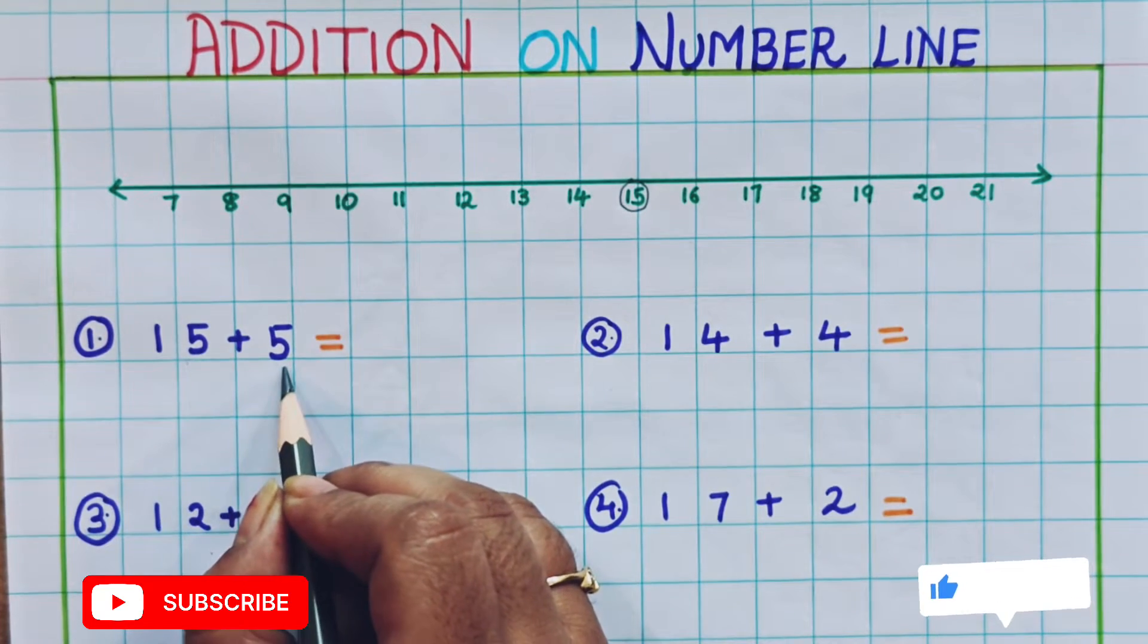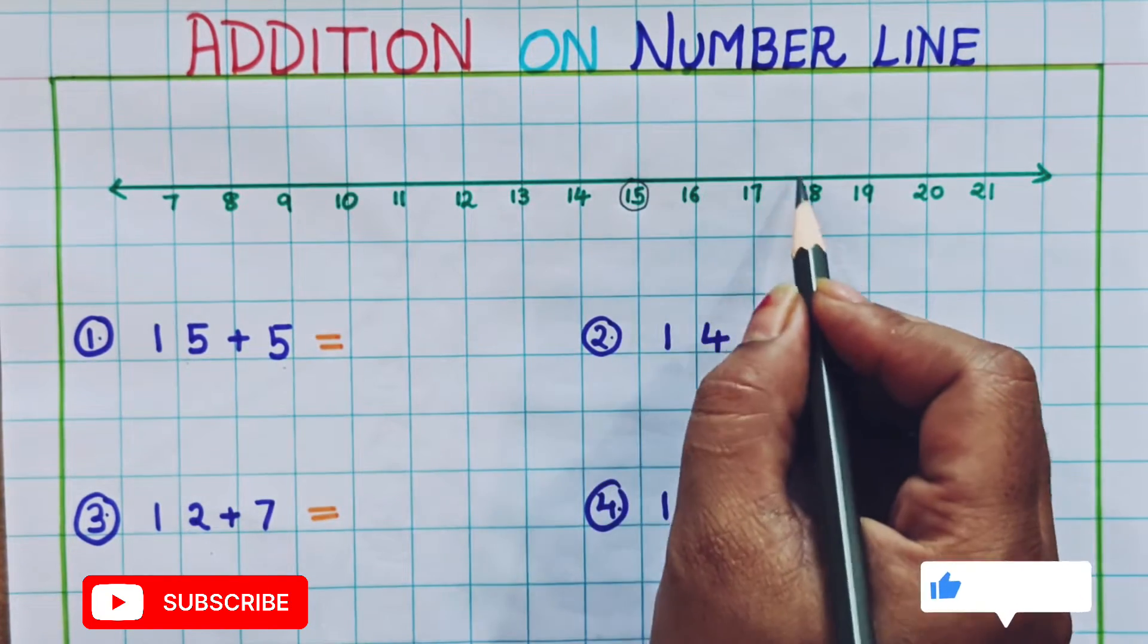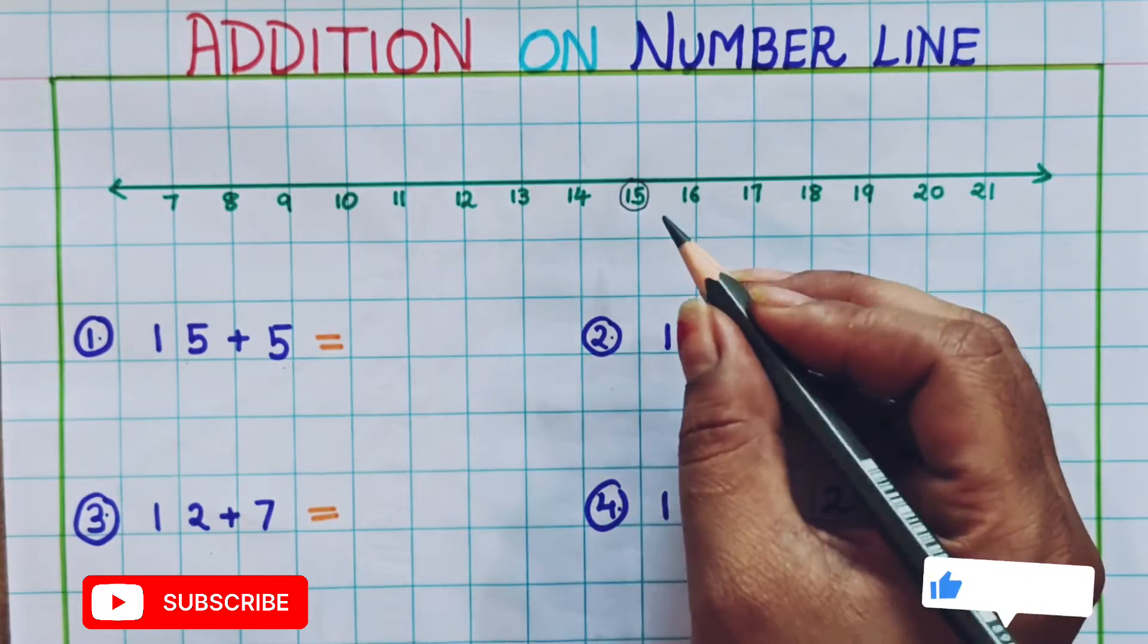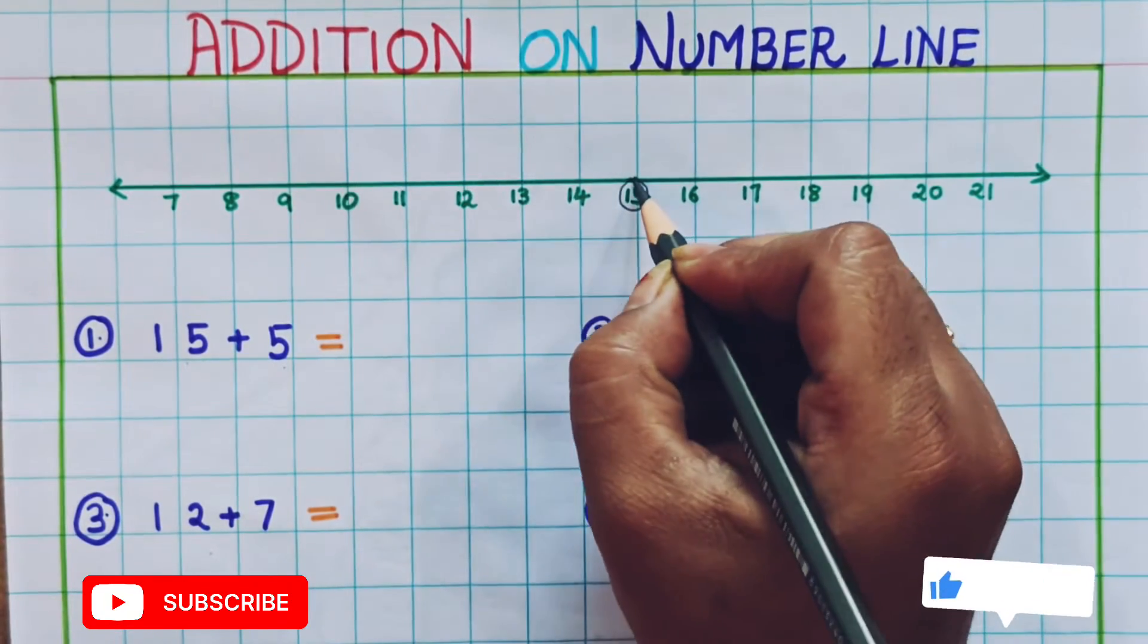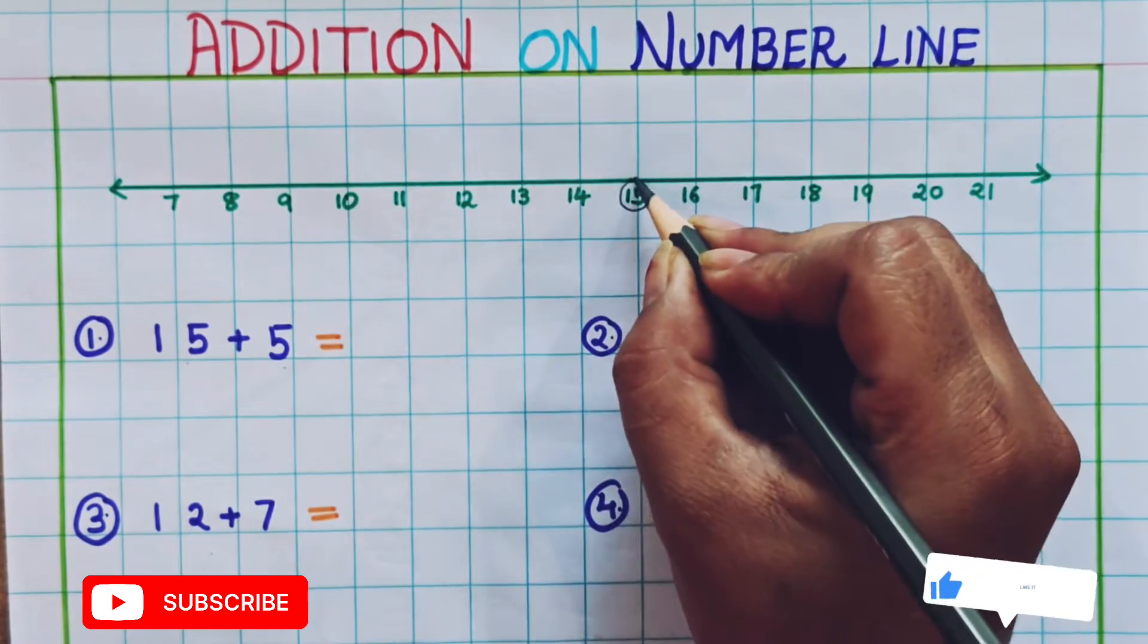15 plus 5. So first we are going to locate 15. Here, this is 15. Now plus 5. How are we going to do plus 5? We are going to add 5 in it. From 15 we have to go 5 places. So let's do it.